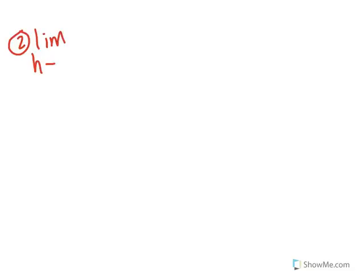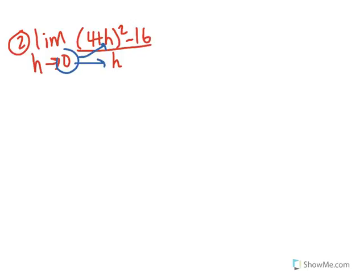In the next example, find the limit as h approaches 0 of 4 plus h squared minus 16, all over h. You try plugging in 0 first — that's always the first thing you want to try — and you get 4 squared minus 16 over 0, or 0 over 0, which you can't have.